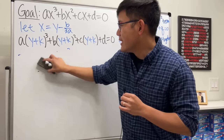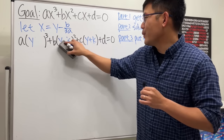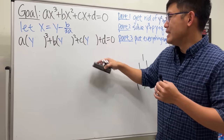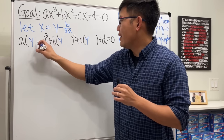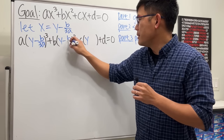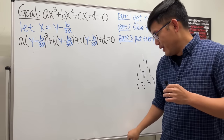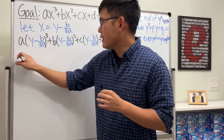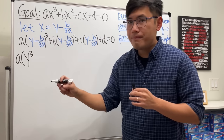Again, both are positive so k should be negative. We need -b/(3a). So x = y - b/(3a). Let's go ahead, substitute in k = -b/(3a), and multiply everything out to see what happens.